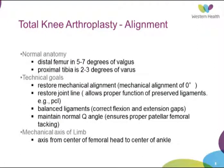For the registrars and residents: the normal anatomy has the femur in about 5 to 7 degrees of valgus on the anatomical axis. We're looking to restore the mechanical alignment of zero degrees. We want to restore the joint line, have ligamentous balance, and maintain a Q angle so we get proper patellar tracking and avoid maltracking and anterior knee pain. The mechanical axis of the limb runs from the centre of the femoral head, down through the middle of the knee, into the centre of the ankle.